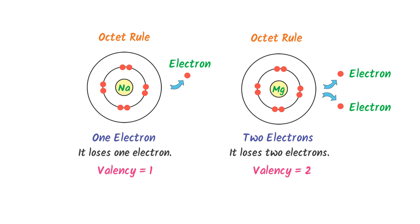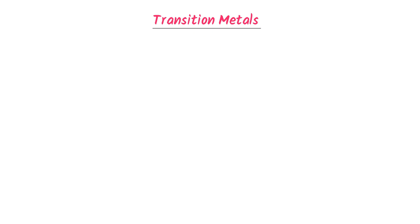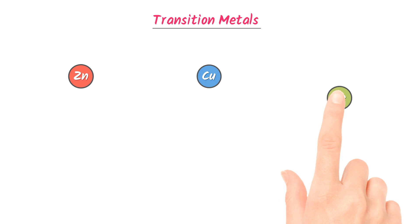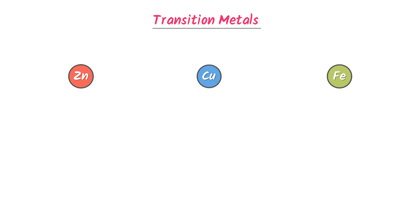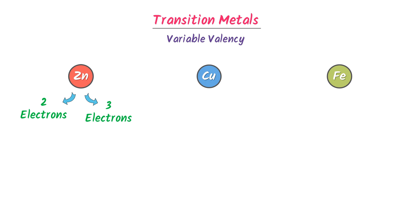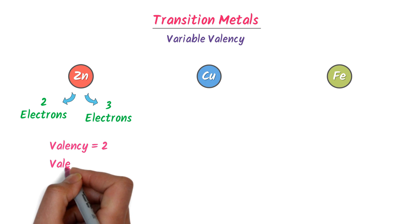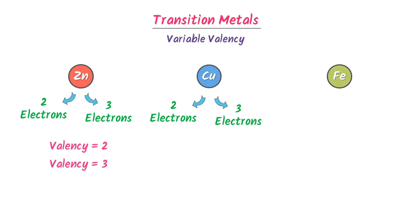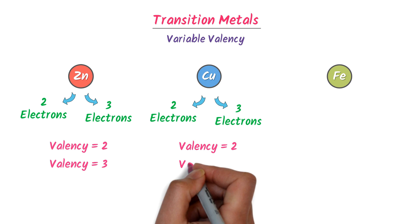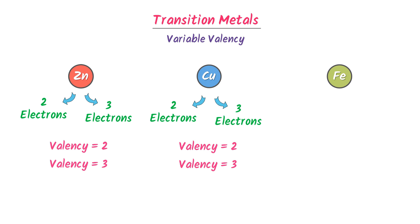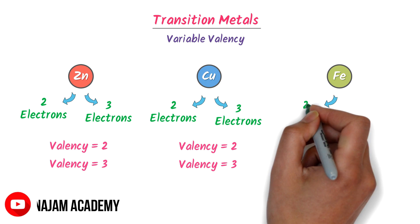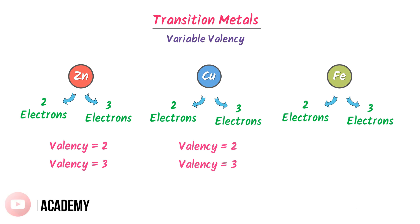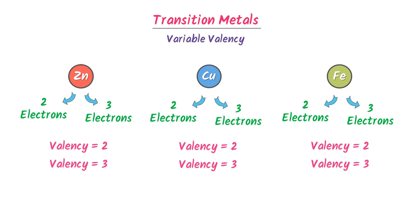Now, let me teach you one bonus point about transition metals. Consider zinc atom, copper atom and iron atom. Remember that these atoms have variable valency. Zinc can lose two electrons or three electrons, so the valency of zinc is either two or three. Similarly, copper can lose either two electrons or three electrons, so the valency of copper is also either two or three. Similarly, iron can lose either two electrons or three electrons, so the valency of iron is either two or three.